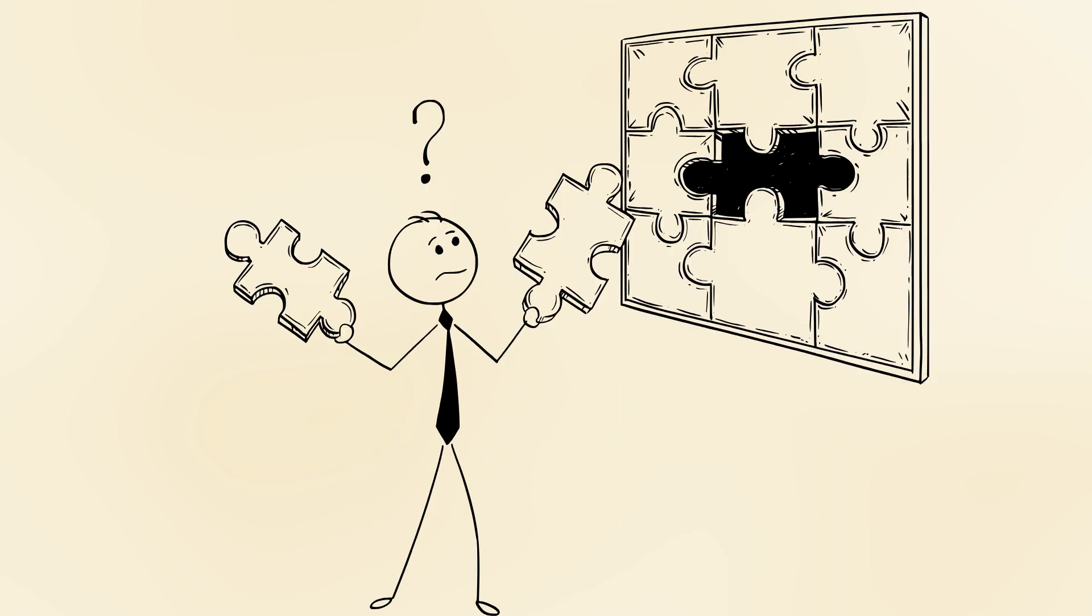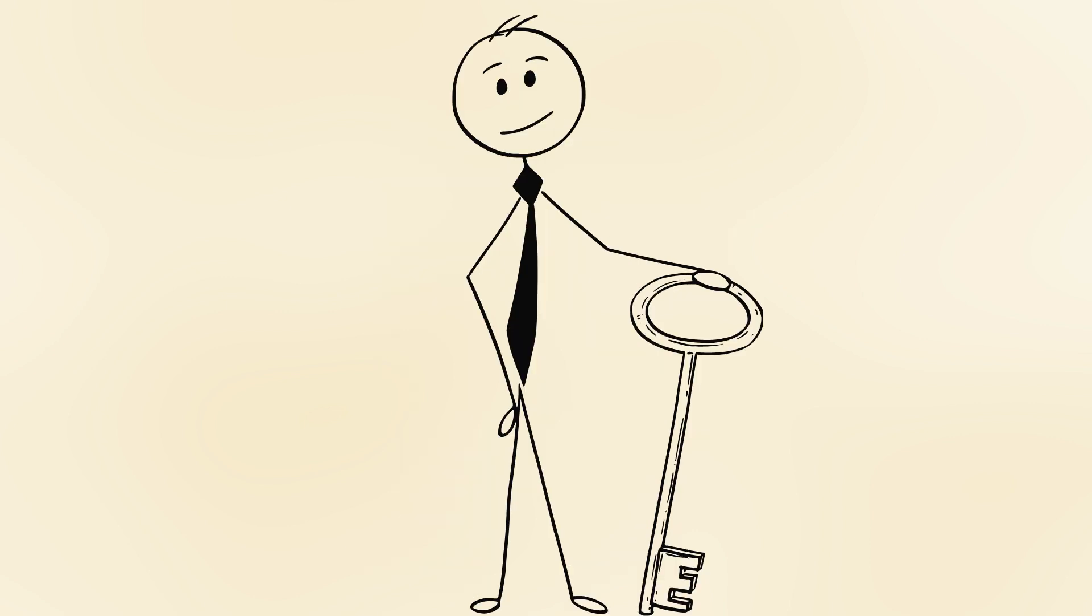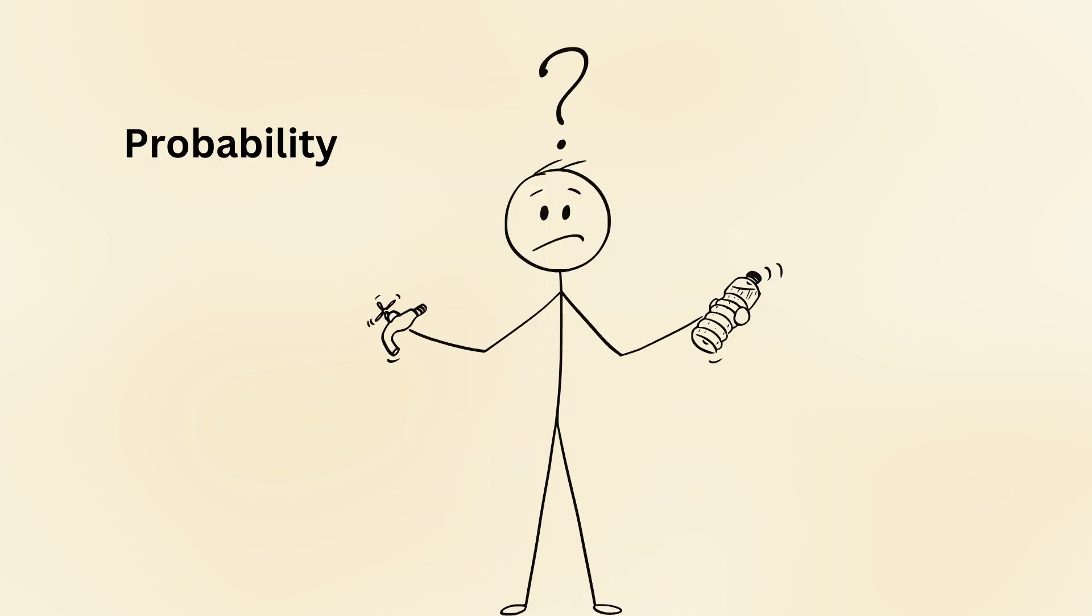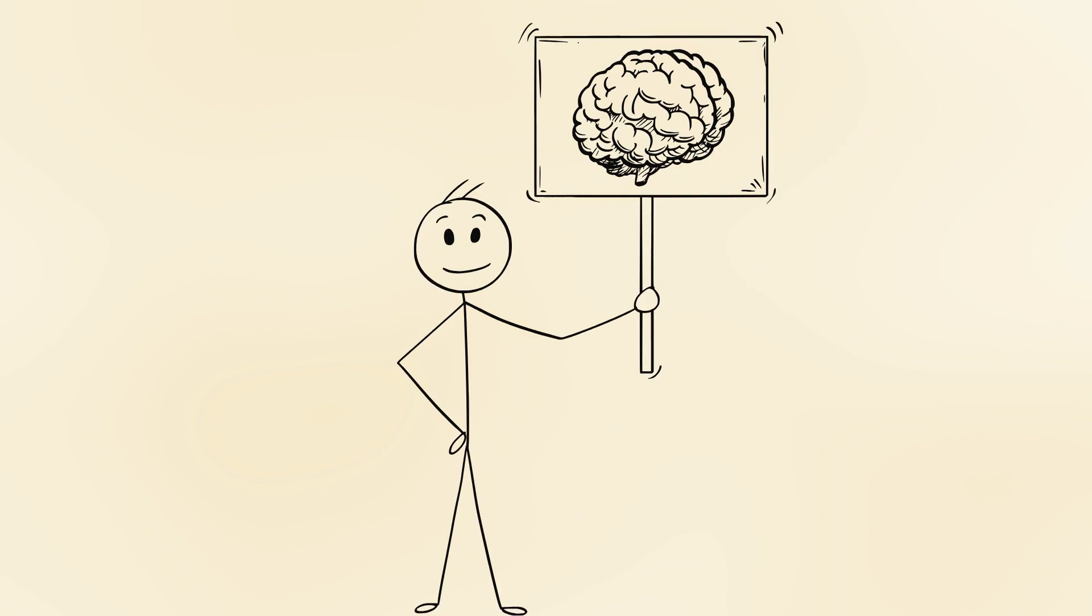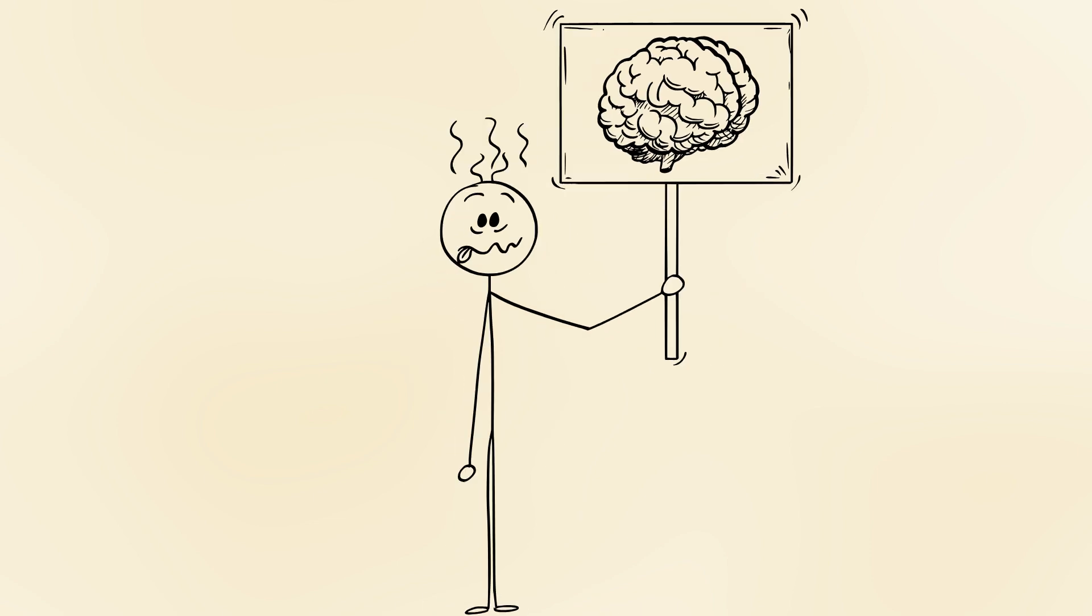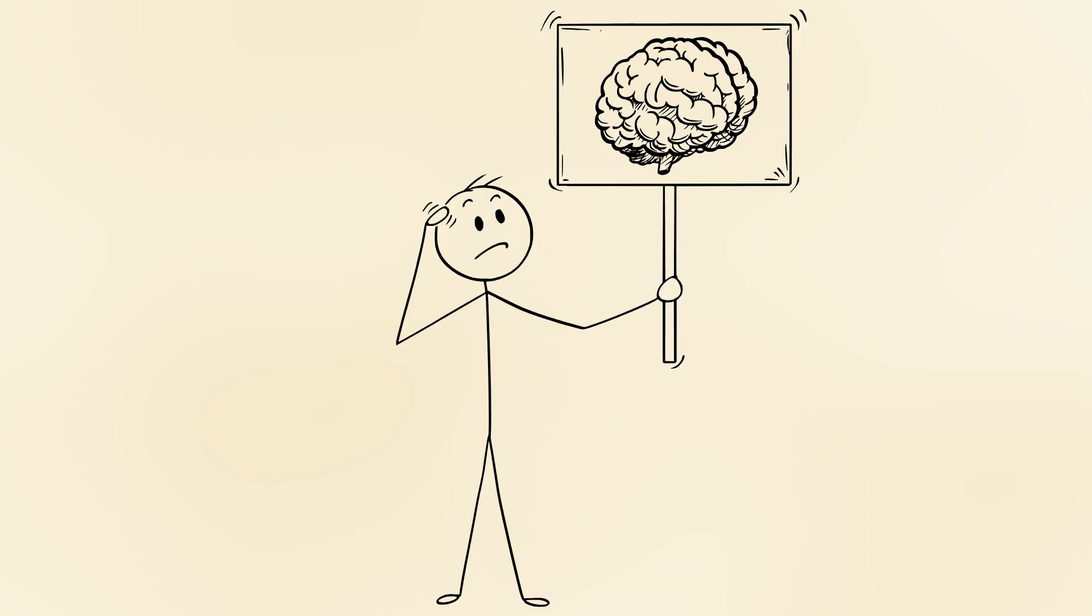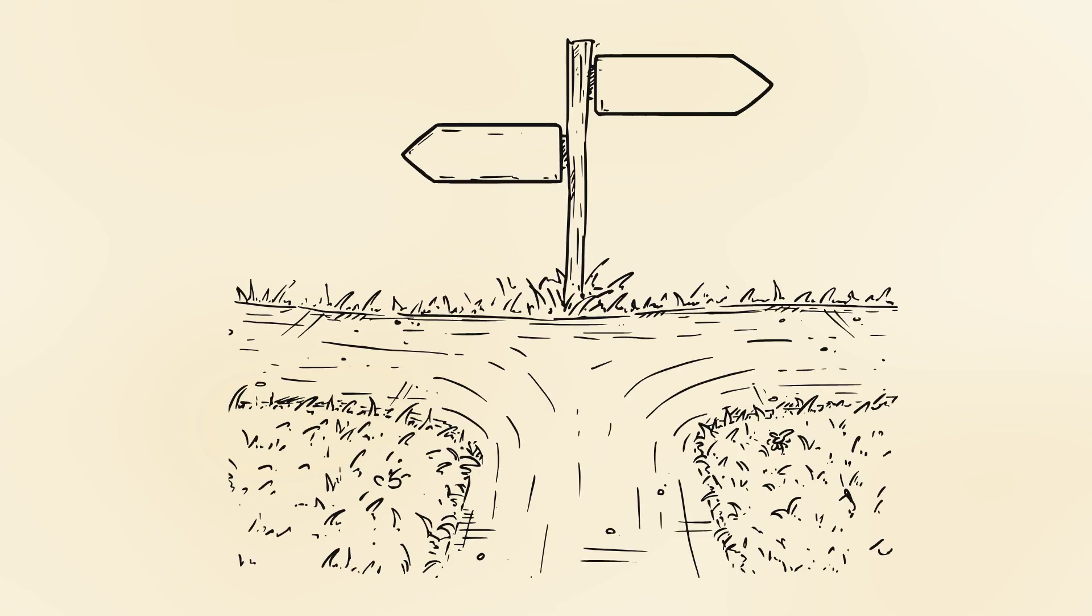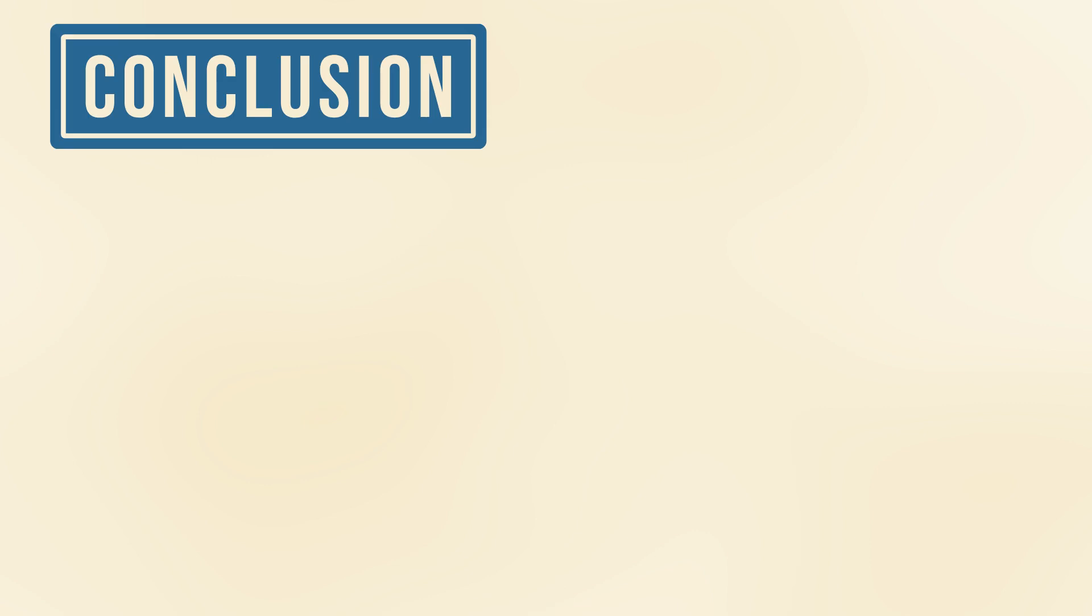The Monty Hall problem is named after the host of a famous game show, and it has puzzled many people, including experts. It teaches us a valuable lesson about probability and decision-making. Sometimes, what seems like common sense may actually be misleading. By understanding the underlying principles of the problem, you learn that taking action, in this case switching, is the smarter choice.